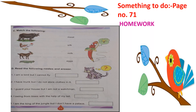Now, something to do — page number 71. This is your homework, children. Page number 71 mein homework likho, aaj ki date daro. You have to do Exercise C and Exercise D at home. Match the following: buffalo, hen, goat, caterpillar, silkworm — pictures are here. Left side: buffalo, hen, and goat; right side: meat, silk, milk, eggs — you have to match.